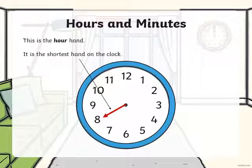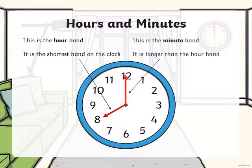This is the hour hand. It is the shortest hand on the clock. This is the minute hand. It is longer than the hour hand.